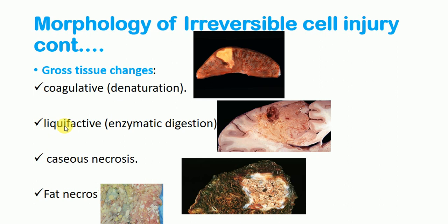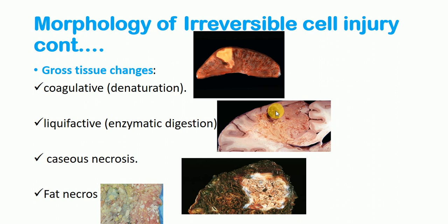Another gross pattern is liquefactive necrosis, which means easy liquefaction after enzymatic digestion. This condition occurs mostly in the brain because the brain is highly composed of lipids, making liquefaction easier. As shown, this is the area affected by cell injury and necrosis, and there is liquefaction present.